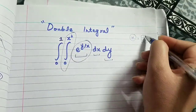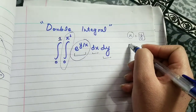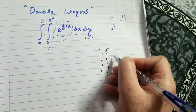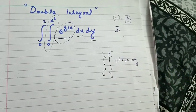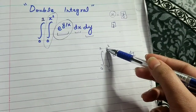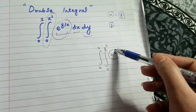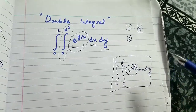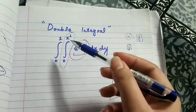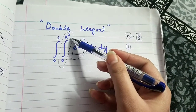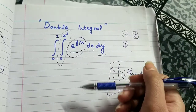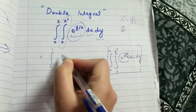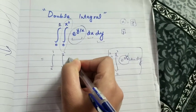If the limit is in the x variable, then the integration would be done with respect to y first. If the limit were in the y variable, then the integration should be done with respect to x first, and then y. So the order of integration is determined based on which variable occurs in the limits. Since x occurs in the limit here, the first integration will be done with respect to y.